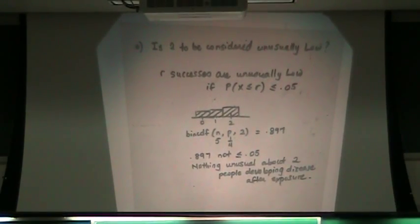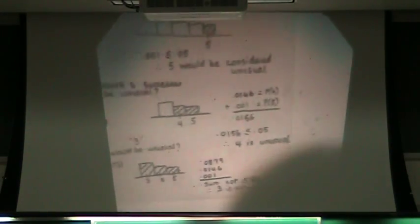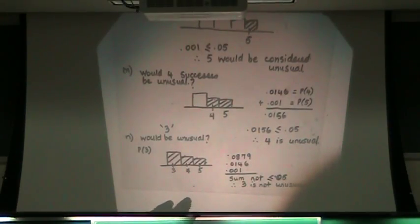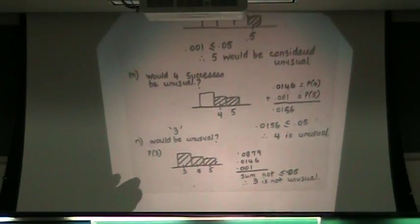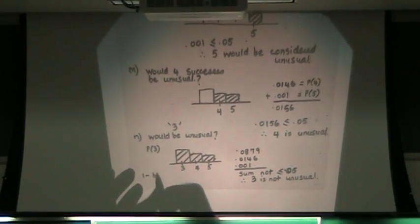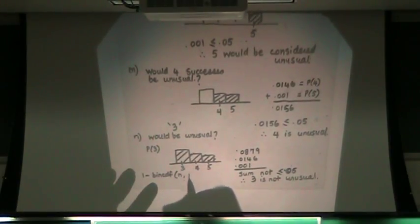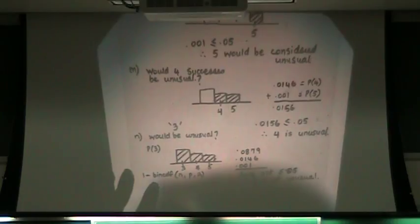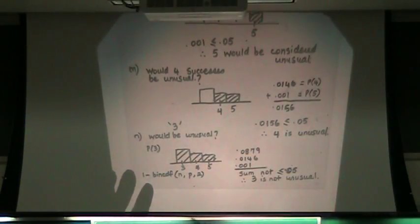Does this make sense? There's a question about the previous question, would three be unusual? The quick way to do this would be one minus binomial CDF of n, p, 2, which is what we did, so it would be one minus 0.897, right?